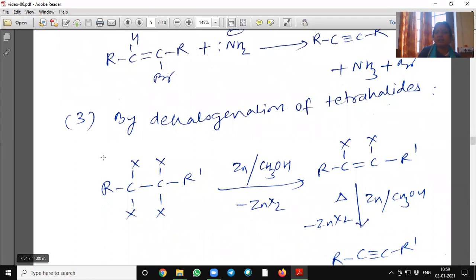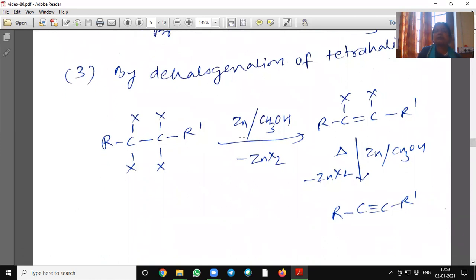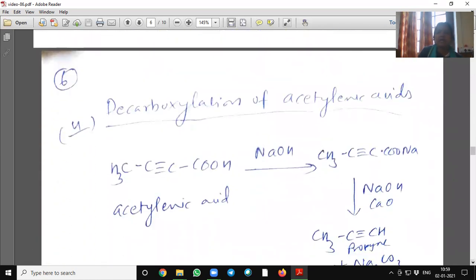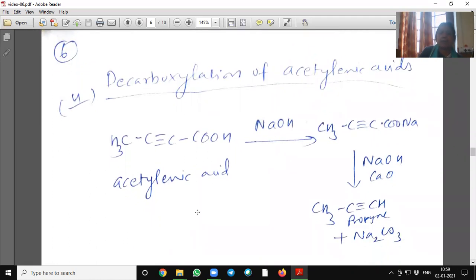By dehalogenation of tetrahalides in presence of zinc and methanol, it will dehalogenate and it will give first alkene and then alkyne. Decarboxylation of acetylenic acids also give alkynes. Acetylenic acid on reaction with NaOH will give sodium salt and then with soda lime, it will give propyne.